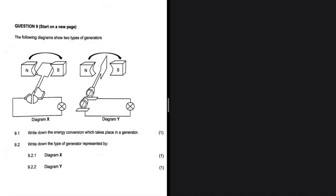Write down the energy conversion which takes place in a generator. We know that generators turn mechanical energy to electrical energy, while motors on the other hand turn electrical energy to mechanical energy. That is question 9.1.